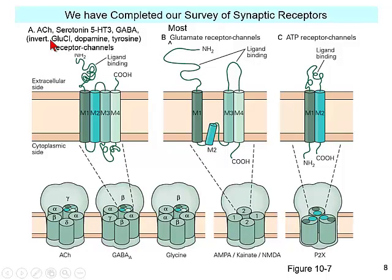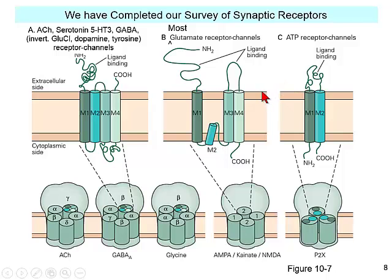We have pretty much completed our survey of synaptic receptors. We've talked about the family that includes acetylcholine, serotonin, and GABA, as well as invertebrate gluCL channels activated by ivermectin. We also talked about glutamate receptor channels with a totally different topology and subunit number, and a third class of synaptic receptors for ATP, which have a different membrane topology and only three subunits per receptor.